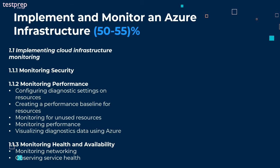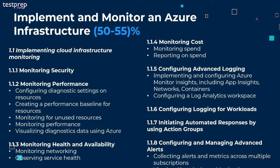Number three, monitoring health and availability, divided into monitoring networking and observing service health. Number four, monitoring cost, divided into monitoring spend and reporting on spend. Number five, configuring advanced logging, divided into implementing and configuring Azure Monitor insights including app insights, networks, and containers, and configuring a log analytics workspace. Number six, configuring logging for workloads. Number seven, initiating automated responses by using action groups. Number eight, configuring and managing advanced alerts, divided into collecting alerts and metrics across multiple subscriptions and viewing alerts in Azure Monitor logs.